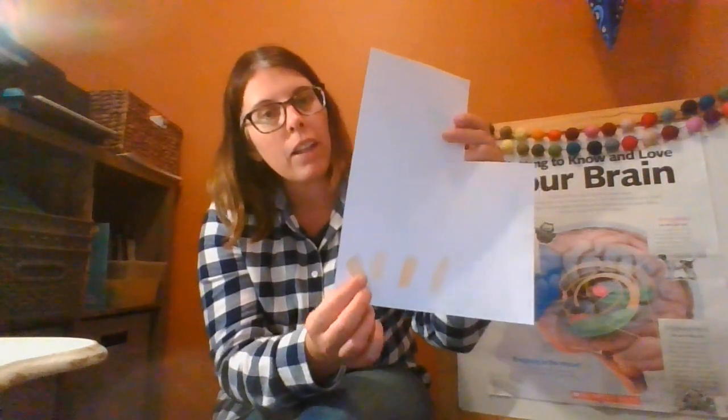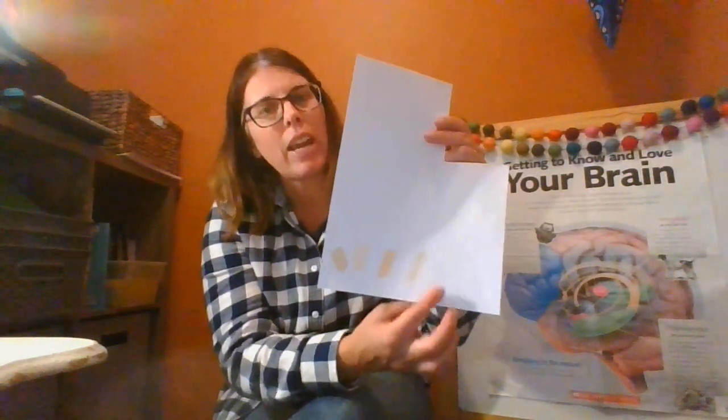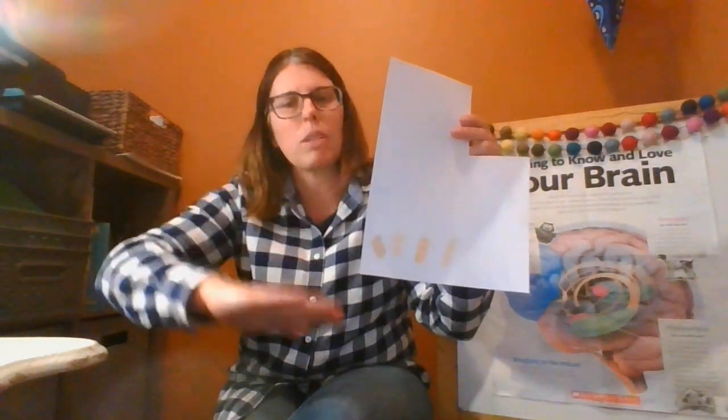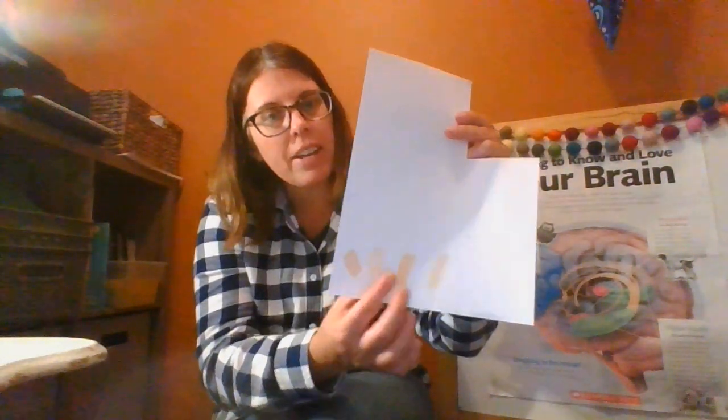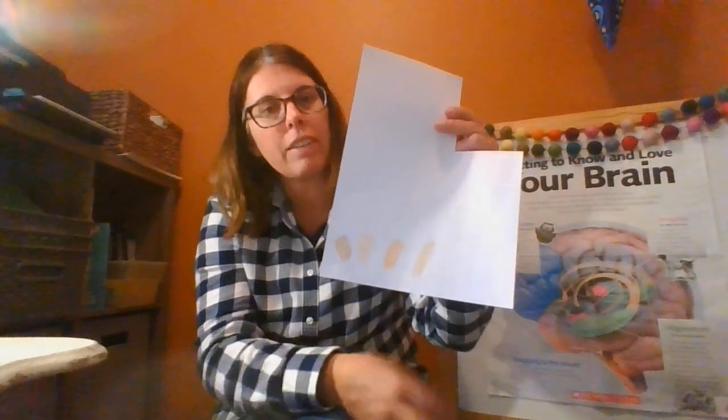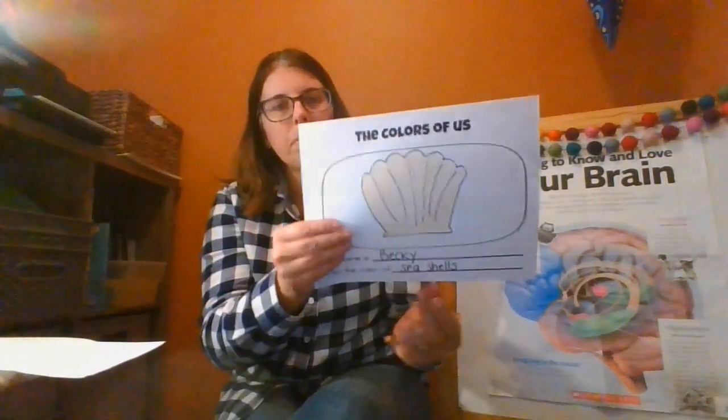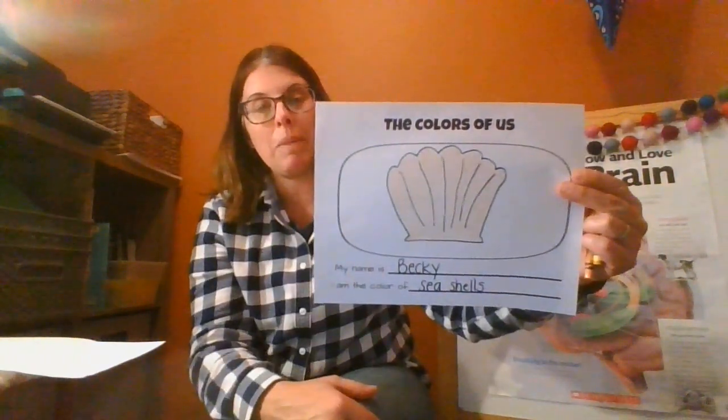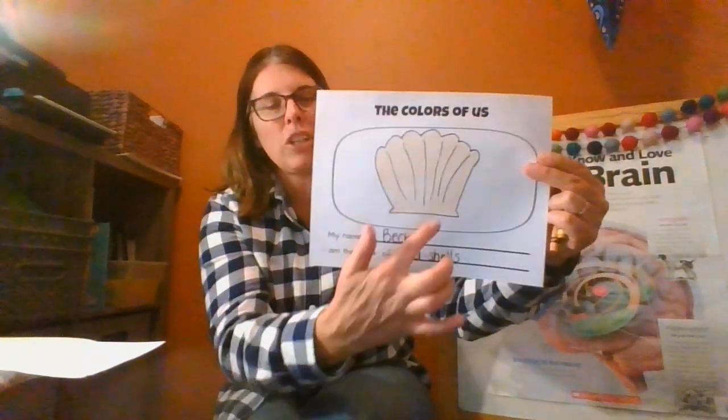So what I decided to do was take this one that's too dark and color it a real light shade of it. So just with the side of the tip, just don't press hard, just press lightly. And then I took this other color here and I just colored lightly on top of it. And the mix of those colors together gave me a color that looks like this, which I thought was similar to my skin color, the color of seashells.